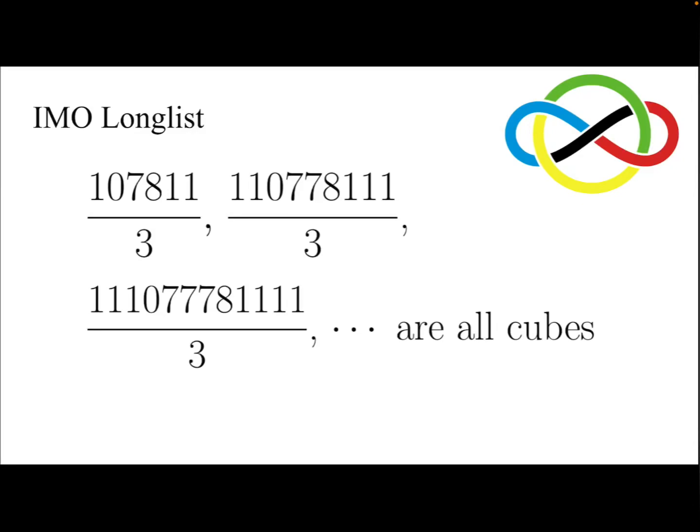In this video, we are going to solve a problem taken from the IMO Longlist 1967 proposed by Bulgaria. We are given a sequence starting with the following three numbers: 107811 over 3, 110778111 over 3, 11107778111 over 3, and as this sequence goes on to infinity, all the numbers in this sequence are all cubes.